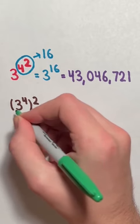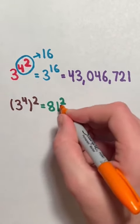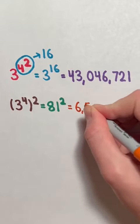You must first do what's inside the parentheses, so 3 to the power of 4, which is 81. Now we have 81 to the power of 2, which is 6,561.